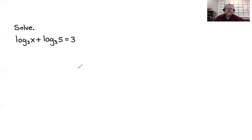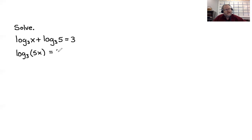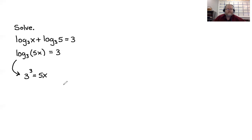Next: logarithm base 3 of x plus logarithm base 3 of 5 equals 3. Using the product property, log base 3 of x plus log base 3 of 5 equals log base 3 of 5x. That equals 3. Converting to exponential form: 3 to the third power equals 5x. Three cubed is 27, so 27 equals 5x. Dividing both sides by 5 gives x equals 27 fifths.